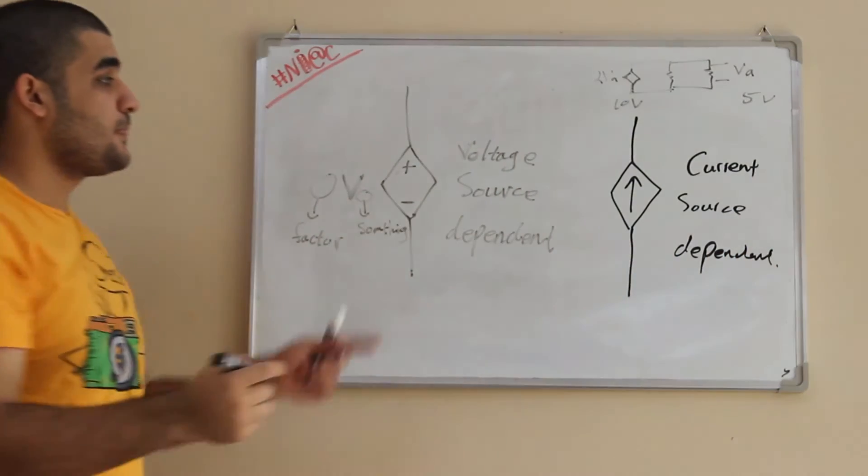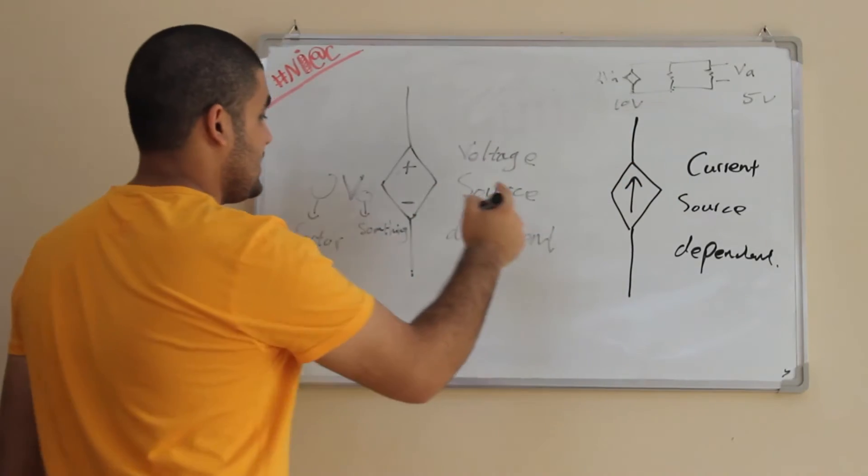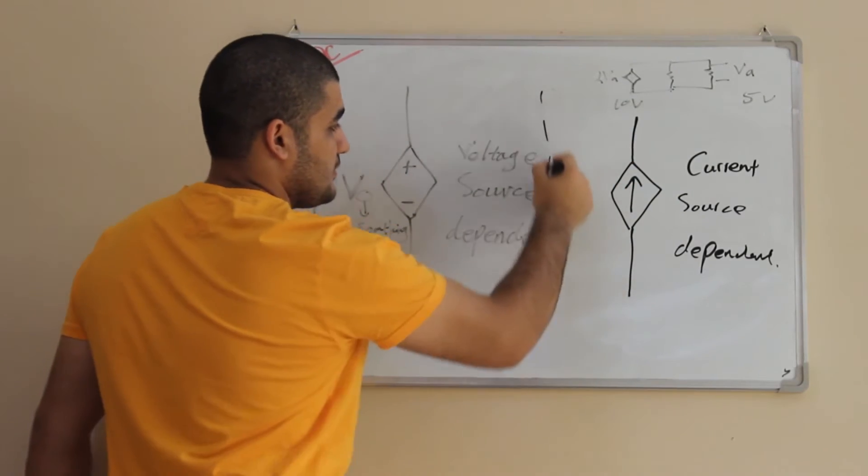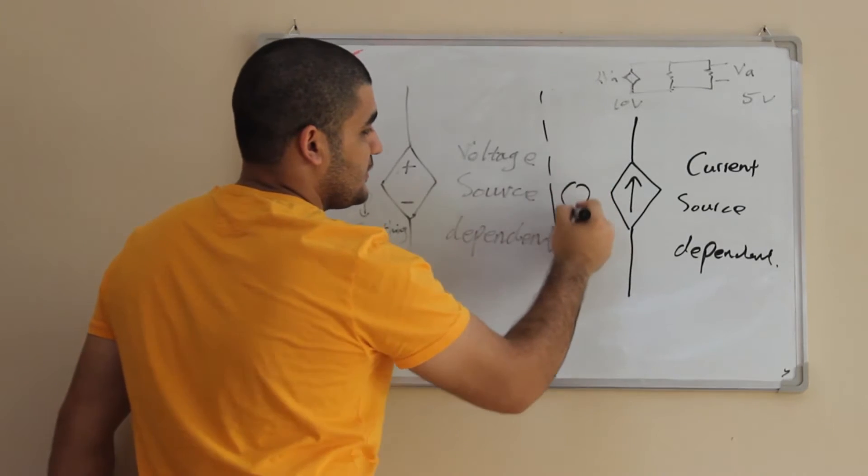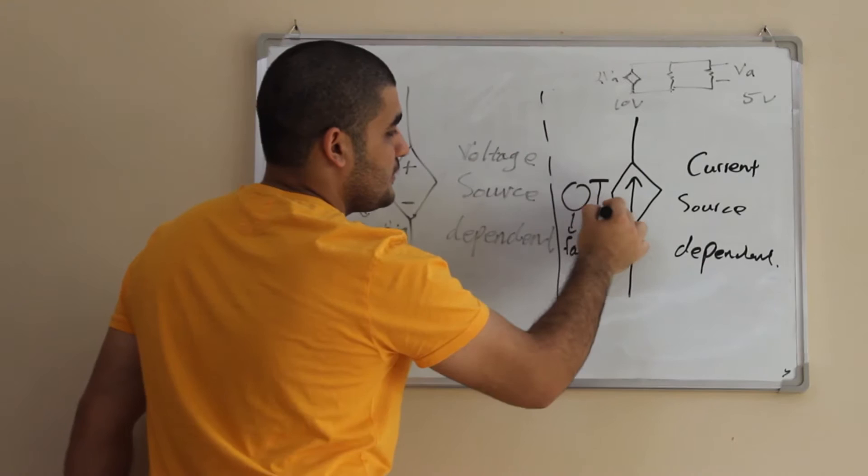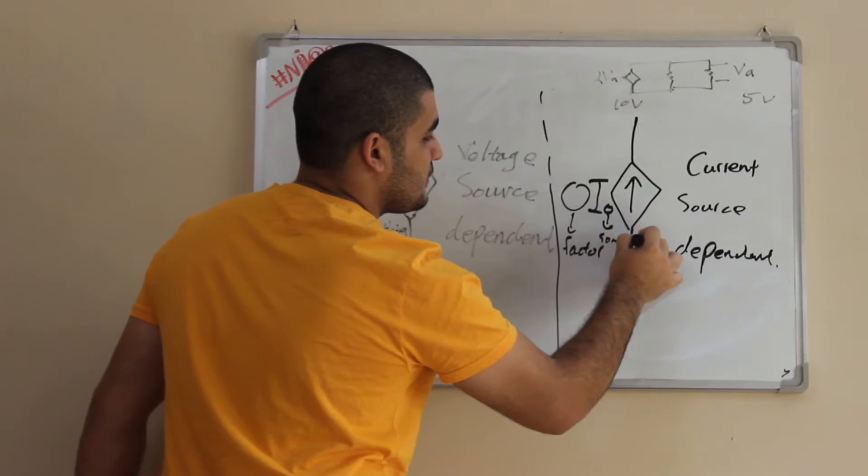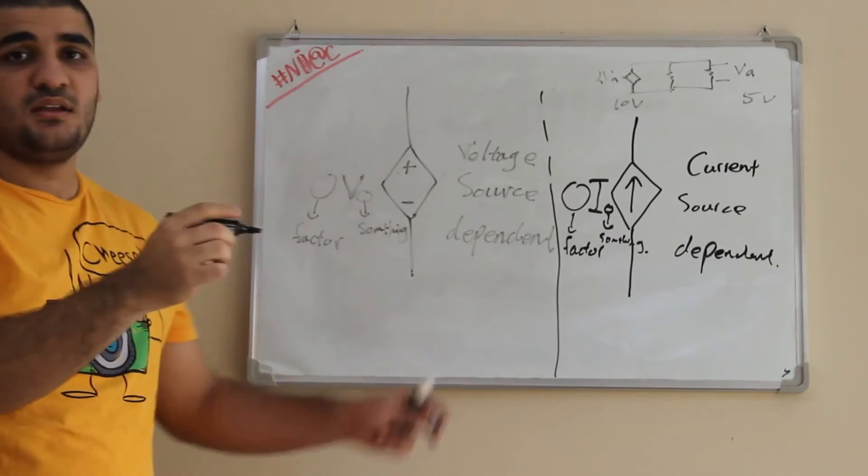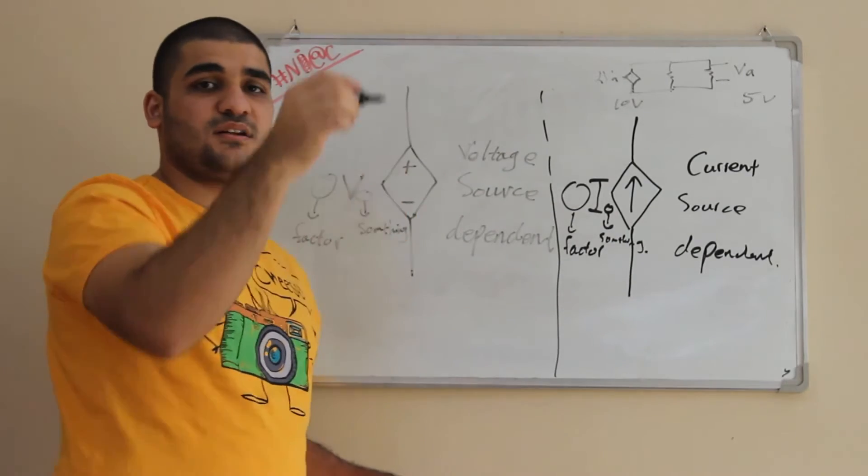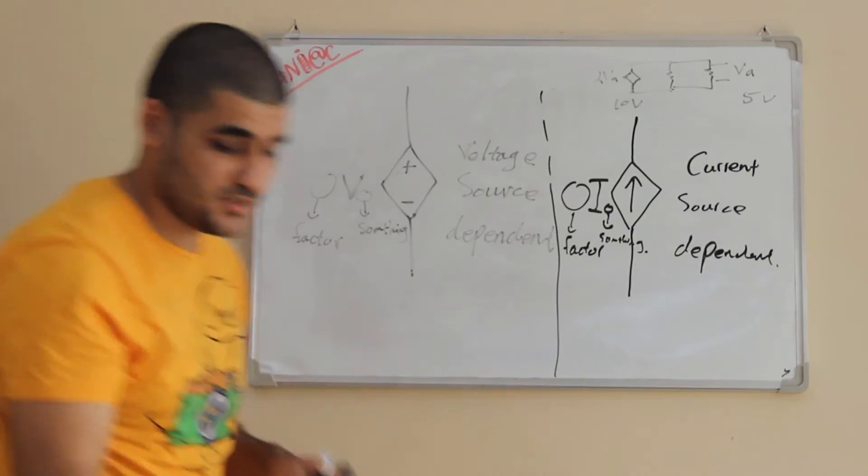Now if you see this symbol, it is a current source, but it's dependent too. Just the same as the previous one, but the thing that's going to be right here, for example, a factor and I something. This something may be another current in another branch in the same circuit. So this is the dependent sources.